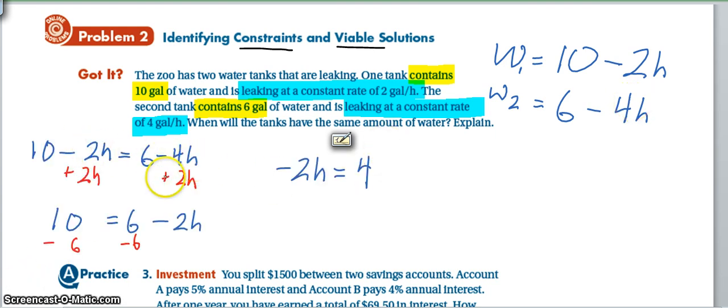So when I set the equations equal, then I decide to add 2h to both sides. Of course, that doesn't have to be your first step, but that's just what I did. Then I work the problems from there and I now get to this point where negative 2h is equal to 4. So I divide by negative 2 on each side and I see that h, the amount of time that it would take for the tanks to be equal, is negative 2 hours.